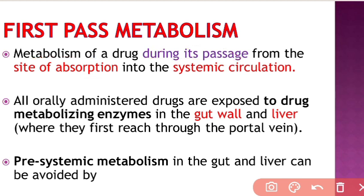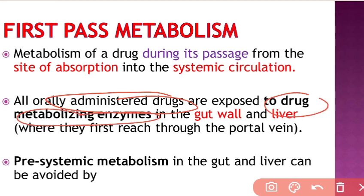All orally administered drugs are exposed to drug metabolizing enzymes in the gut wall and in the liver. These drug metabolizing enzymes are present in the gut wall and in the liver. The drug reaches there through the portal vein, and from the portal vein it reaches to the liver, and after the liver it goes to the systemic circulation. But before that, the metabolism of the drug occurs, and that is called the first pass metabolism or pre-systemic metabolism.